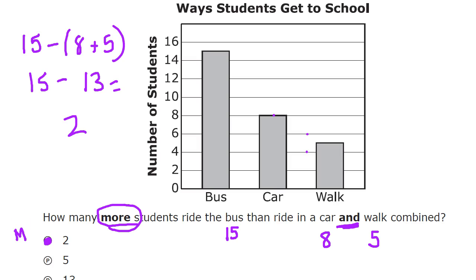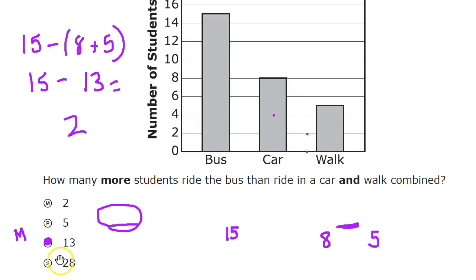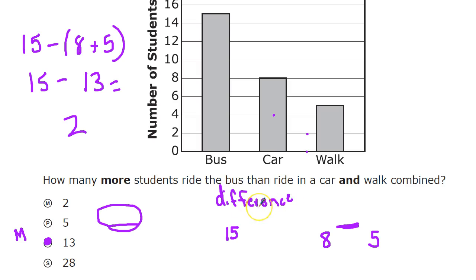Looking at the other answer choices: twenty-eight is basically where you just added all the numbers together. A hint — it's probably not add all the numbers together once you're at this level of testing. Look for keywords that help you. 'Car and walk' is in bold for a reason — it's telling you to combine those two things. The word 'more' should tell you to compare. 'More' between two groups means the difference, and difference is the super word for subtraction.